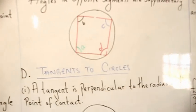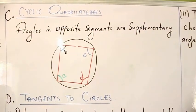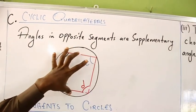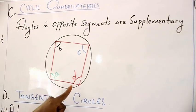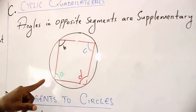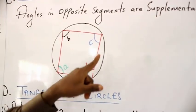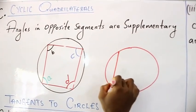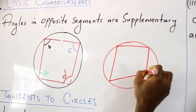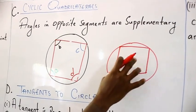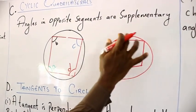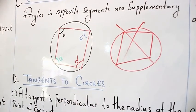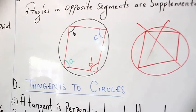We move on to cyclic quadrilaterals. A quadrilateral is a four-sided shape. For a cyclic quadrilateral, the quadrilateral must be inscribed in a circle and all four vertices must touch the circle. Even though a shape may be a quadrilateral, if only three of the four vertices touch the circle, it is not a cyclic quadrilateral.